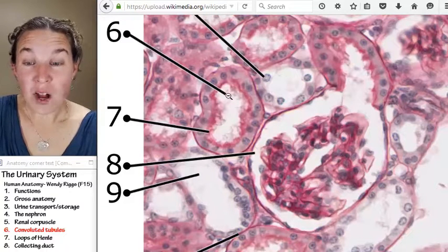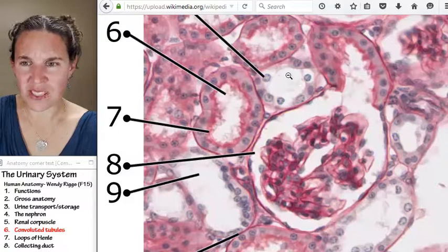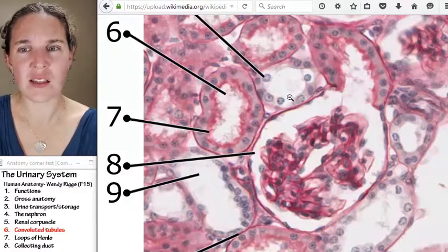Proximal convoluted tubule looks like a mess inside. Distal convoluted tubule looks clean inside. What? How could that be? Are you ready?